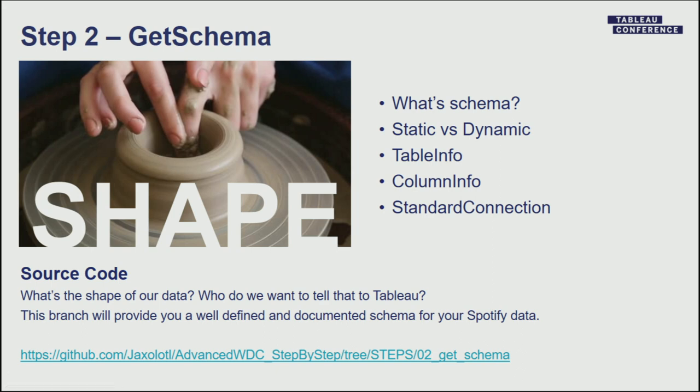So what's next — lesson number two. As we saw in the Spotify connector, the shape of the data — the data model — had a lot of different things: a bunch of different tables, standard connections, and join-only tables. So how do you get to that model? If you use some of the connectors today like QuickBooks Online, you'll see it brings back over 30 different data views with a bunch of standard connections. The method you'll see now is what we used to build those things. Let me check out that piece of code.